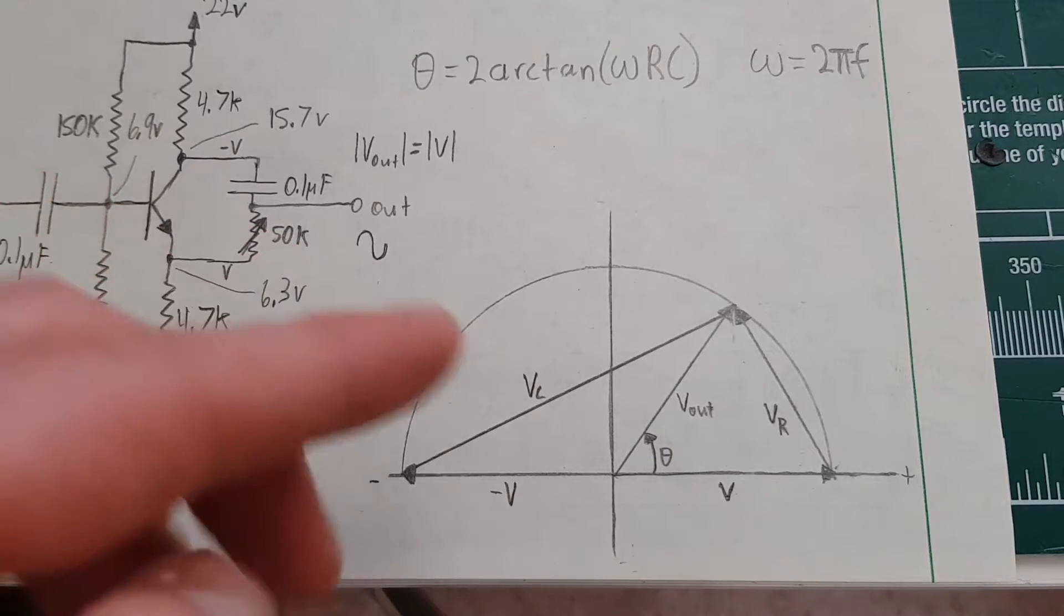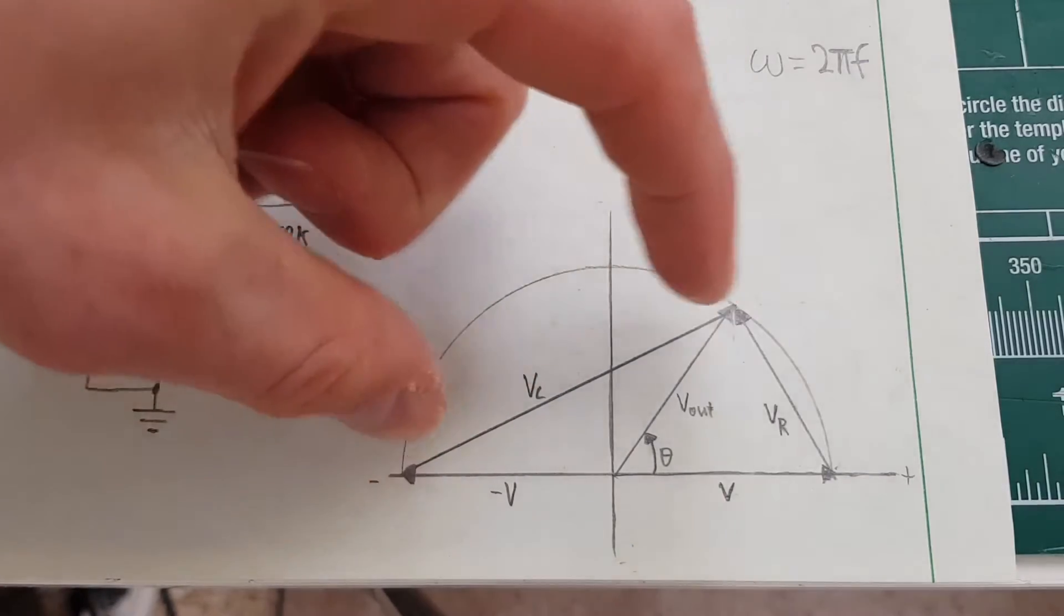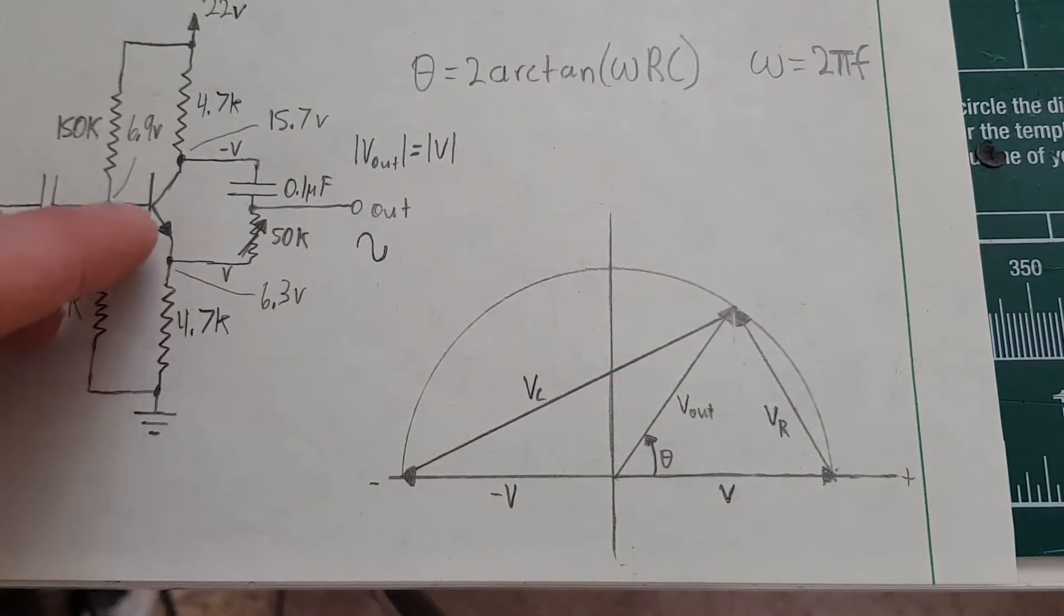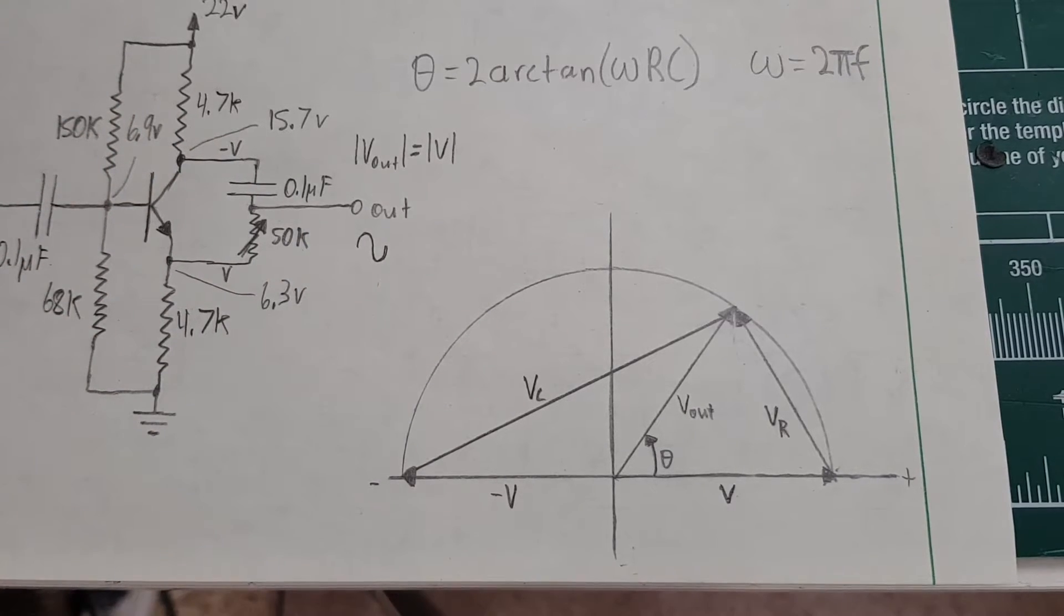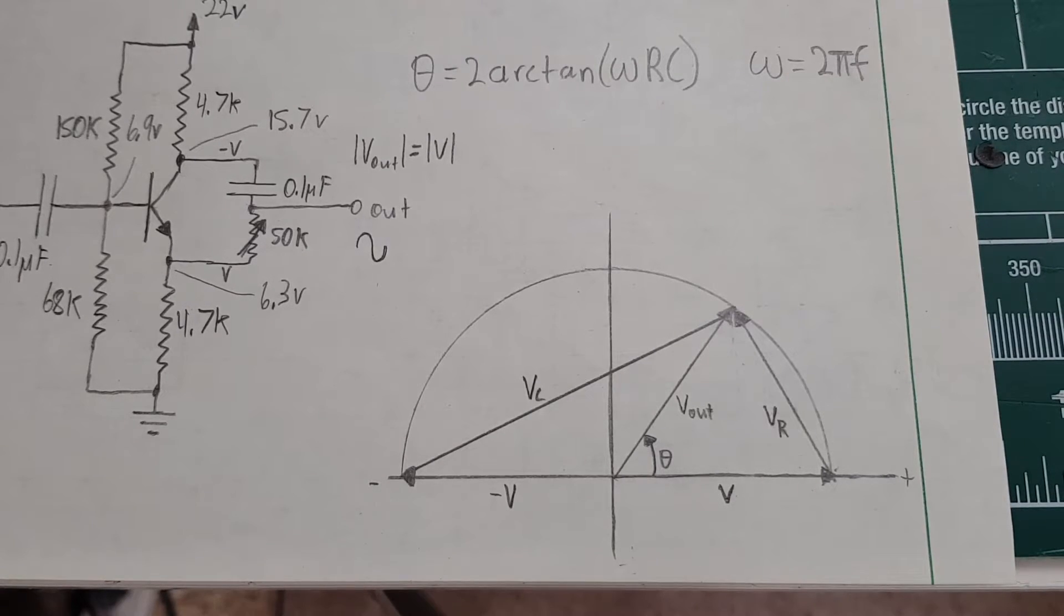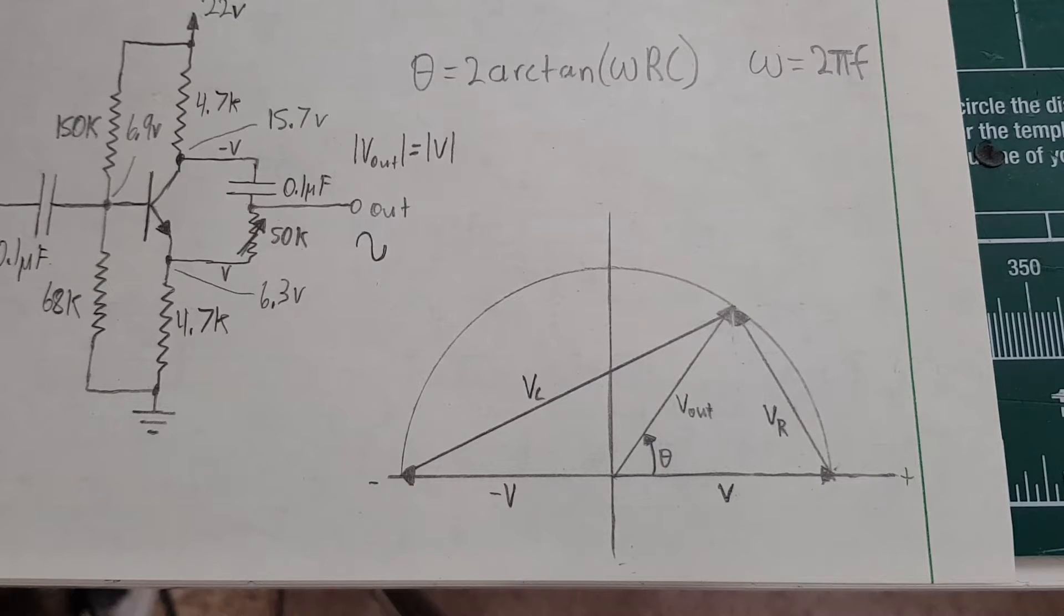But if you turn this all the way down to zero ohms, this vector gets super long and then you have almost all the voltage coming from the emitter, which is zero degrees. And it does go down to about exactly zero because the potentiometer goes down to like a fraction of an ohm I think. So I'll show you this circuit on the breadboard and show you what it does on the scope.